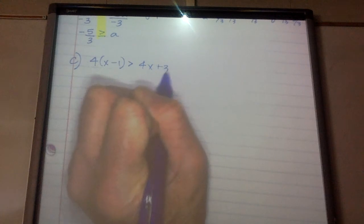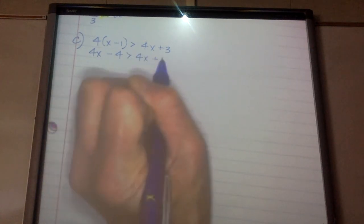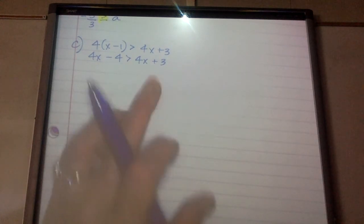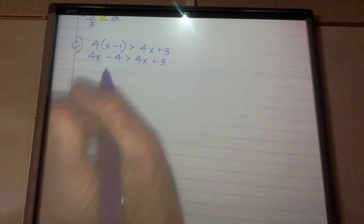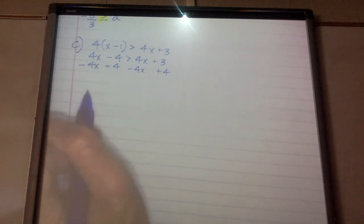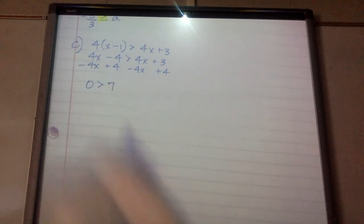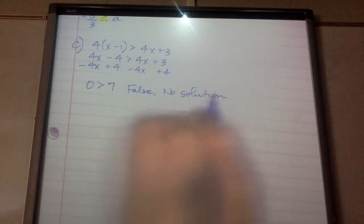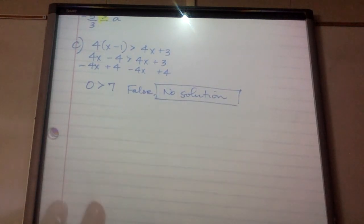Part C: solve 4 parentheses x minus 1, is greater than 4x plus 3. Just looking at that, this is probably going to be no solution because you can't have 4x minus 4 be greater than 4x plus 3. If you keep solving — add 4, subtract 4x — on this side I have 0 is greater than 7, which is false. So, no solution.